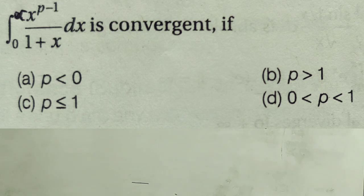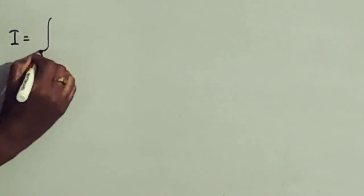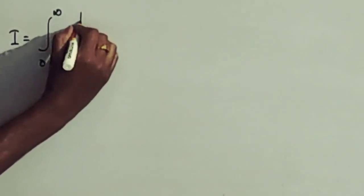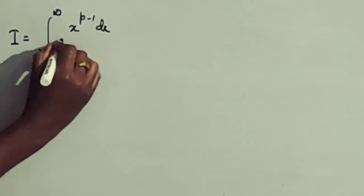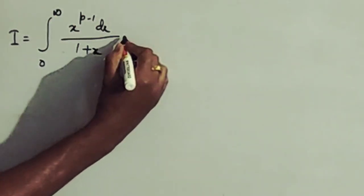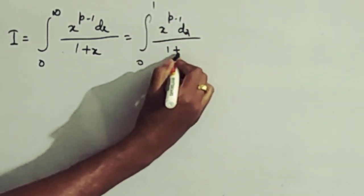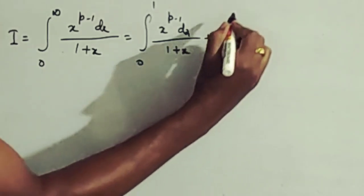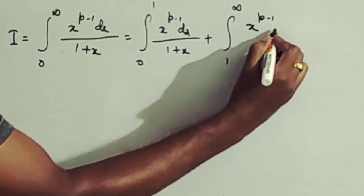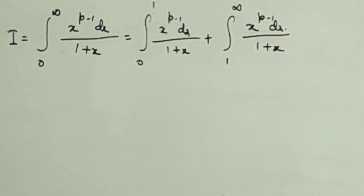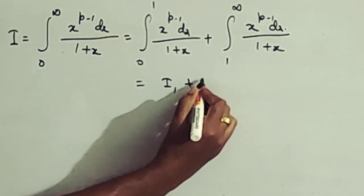We need to find the interval of p for which the integration is convergent. Split this integration into two parts: I equals integration from 0 to infinity of x to the power p minus 1 dx by 1 plus x, which equals I1 = integration from 0 to 1, plus I2 = integration from 1 to infinity of x to the power p minus 1 dx by 1 plus x.